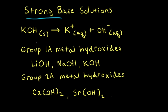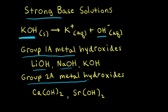When dissolved in water, a strong base like potassium hydroxide will dissociate completely in solution to form hydroxide ions. Potassium hydroxide is an example of a group 1A metal hydroxide. Other examples include lithium hydroxide and sodium hydroxide. Group 2A metal hydroxides are also considered to be strong bases — for example, calcium hydroxide and strontium hydroxide.